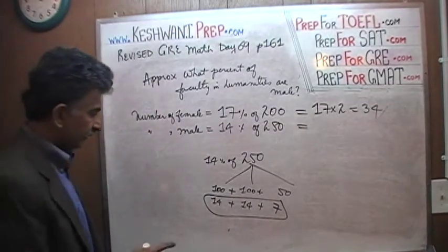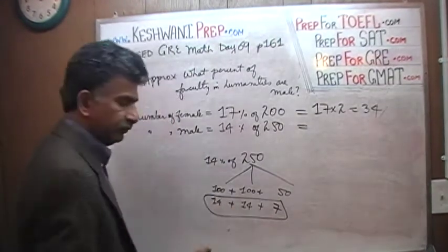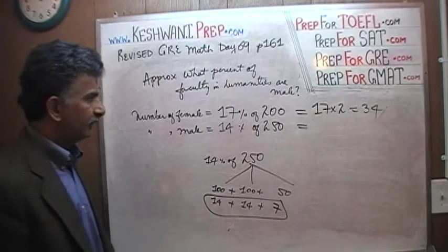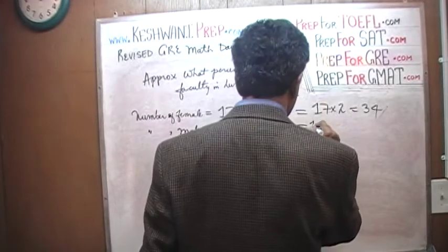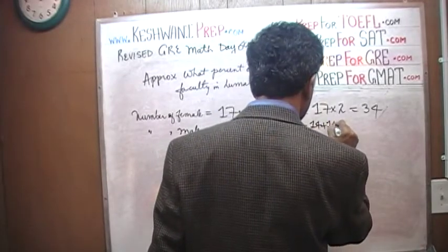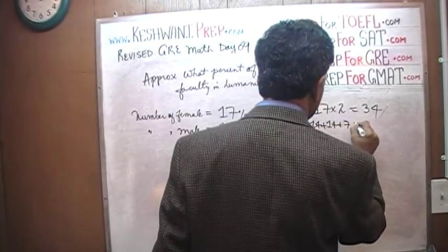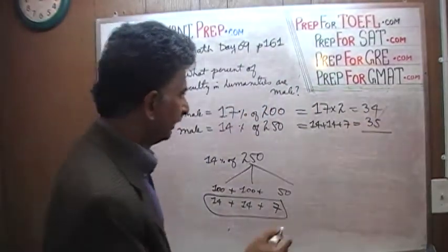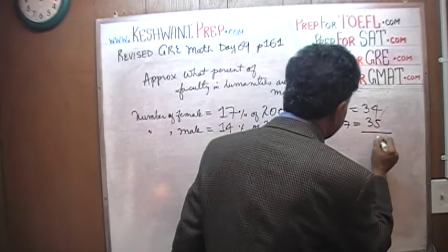Fourteen percent of 250 is 14 plus 14, which is 28, plus 7, 28 plus 2 is 30, plus 5, 35. So right here, let's put it here, 14 plus 14 plus 7 equals 35. So that's it, that's the total number of faculties, 69 apparently. 69.